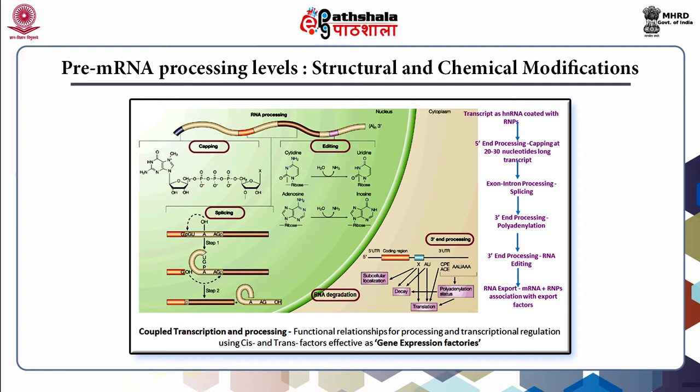Each of these modifications might occur independently of the others, though many studies have revealed functional relationships between these processes and they have been ensured to be co-transcriptional. Importantly, a number of trans-active factors required for pre-mRNA processing directly bind to RNA polymerase, which stimulates processing and in some cases processing feeds back to the RPOL activity. This has led to the proposal that transcription and processing occur in a gene expression factory composed of machines linked together for efficiency and regulation.